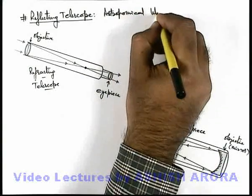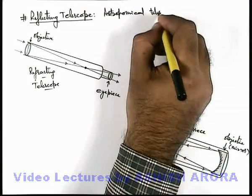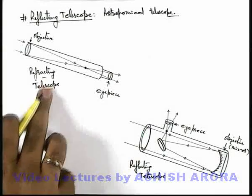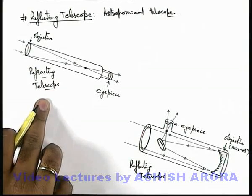We already discussed the astronomical telescope which is of refracting type, and this was the refracting telescope we already studied.